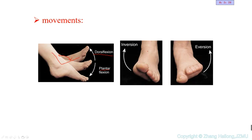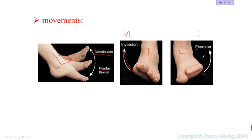This is the left leg. The big toe is on the medial side. If the foot moves medially, we name it inversion. If the foot moves laterally, we name it eversion. So: inversion is movement medially, and eversion is movement laterally. That's the movement of the ankle.